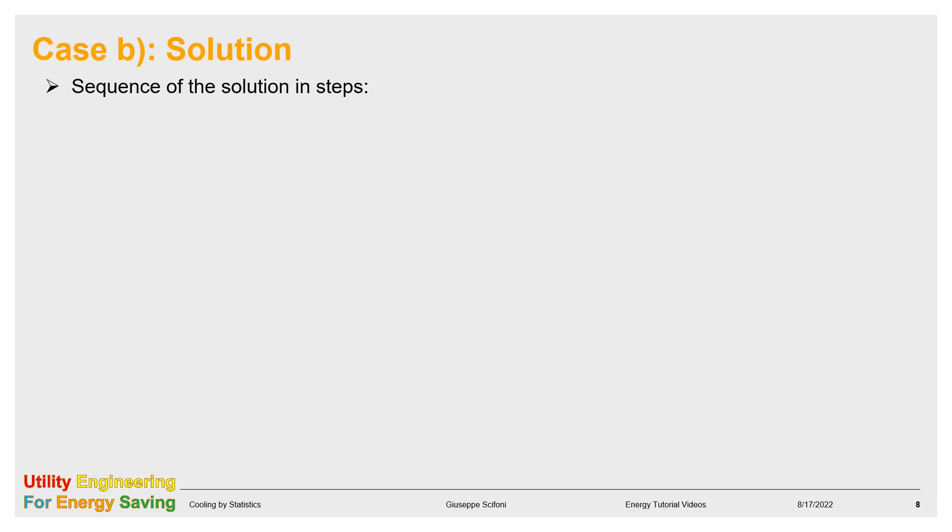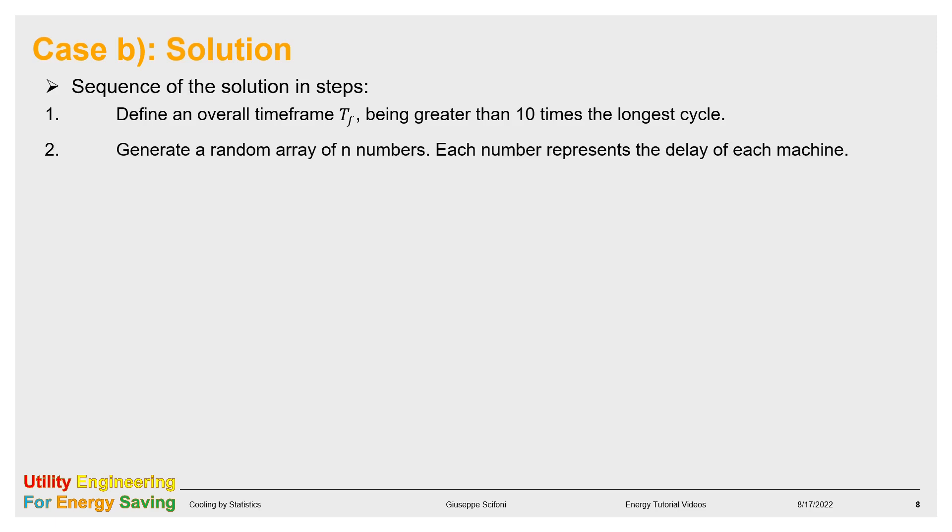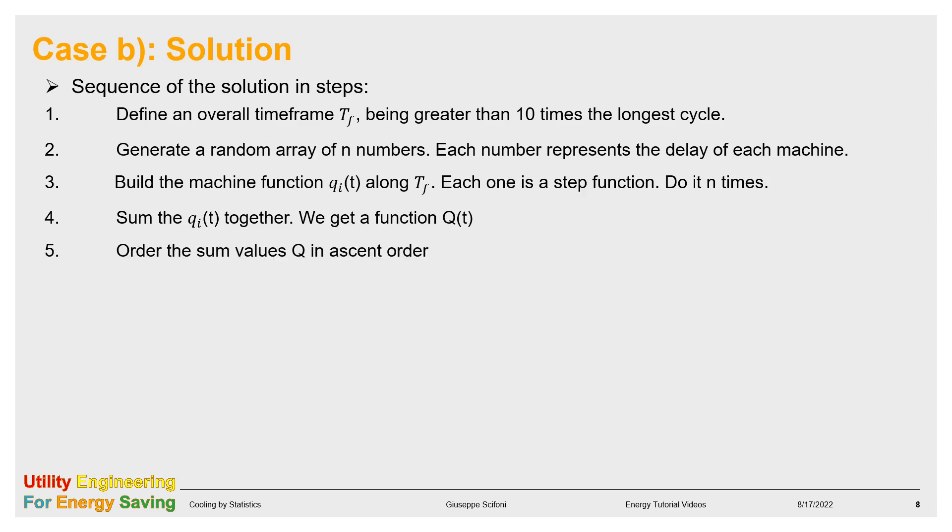The sequence of the solution steps is briefly described here. Define an overall timeframe TF being greater tentatively than 10 times the longest cycle. Generate a random array of N numbers. Each number represents the delay of each machine. Build the machine function QI function of T along TF. Each one is a step function, and that must be repeated N times as many are the machines. Sum the QI functions together. We get the function capital Q, order the sum values capital Q in ascent order. Find the flow capital Q star corresponding to TF 98%.